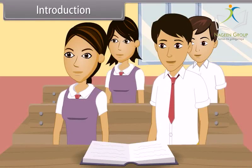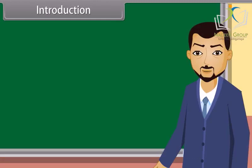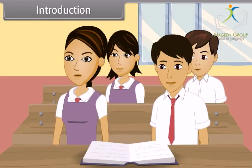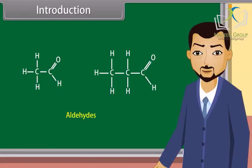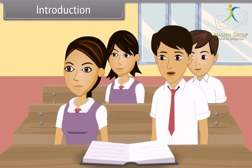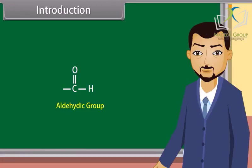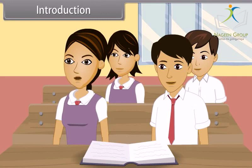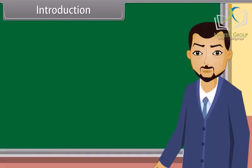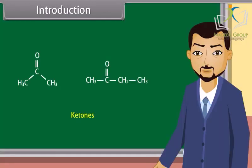Good morning teacher. Good morning students. Today we will learn about aldehydes, ketones and carboxylic acids. Teacher, what are aldehydes? Aldehydes are the organic compounds containing the aldehydic group at the end of a hydrocarbon chain. What is the aldehydic group, teacher? The aldehydic group is a functional group defined as CHO. Now can anybody tell me what are ketones? Ketones are the organic compounds in which a carbonyl group is bonded to two carbon atoms. Very good, Ritu. In this lesson we will learn more about aldehydes, ketones and carboxylic acids.